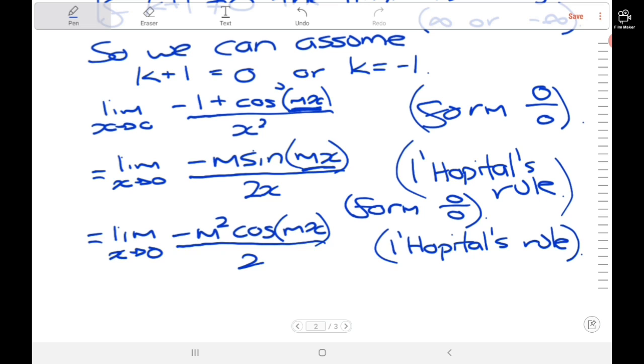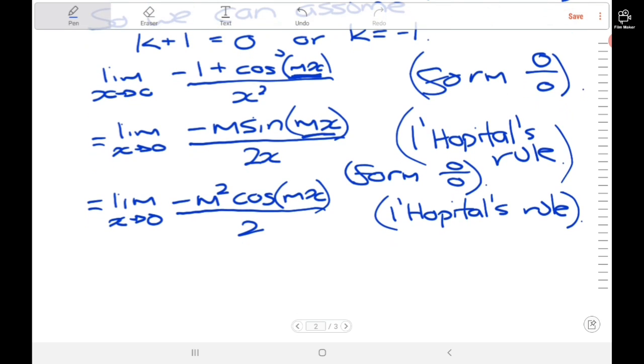L'Hopital's rule gives us this new fraction with an equivalent limit. This can't have the form 0 over 0 because the denominator is 2. If x is 0, then cosine is 1, giving us negative m squared over 2.